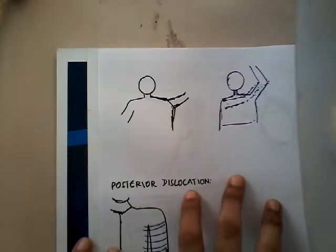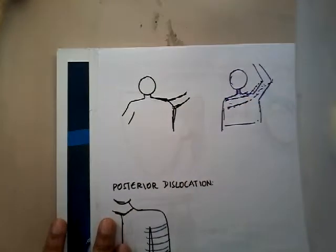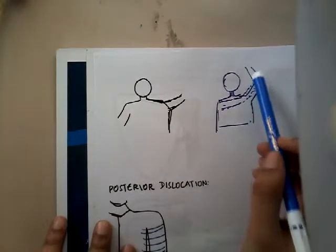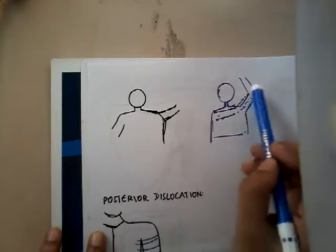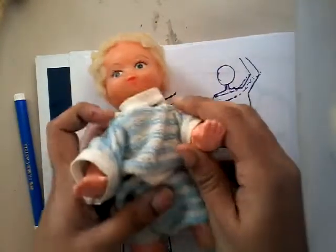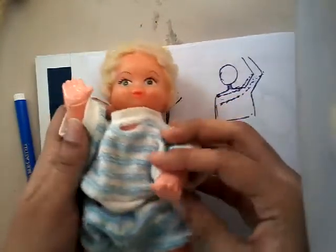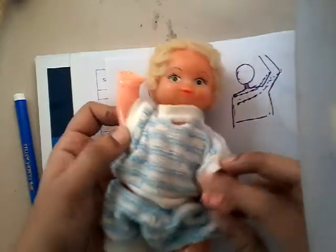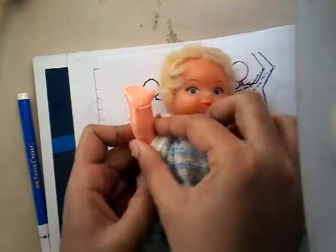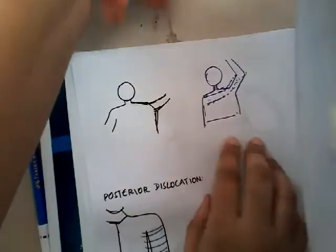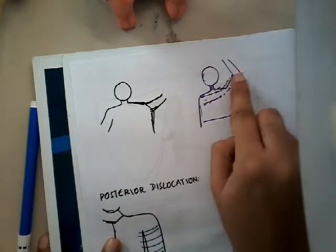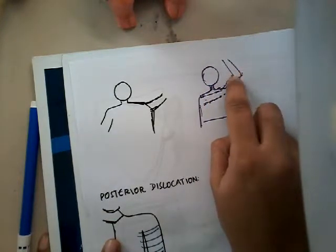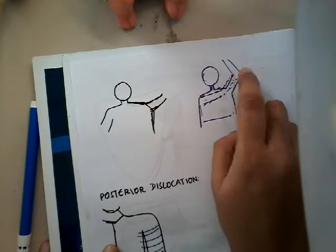How does the patient come to the OPD? The patient comes to the OPD with the shoulder in an abducted position and he will support his elbow with the opposite hand. So that is the attitude of the patient — he will abduct the shoulder and then hold the affected elbow with the opposite hand.